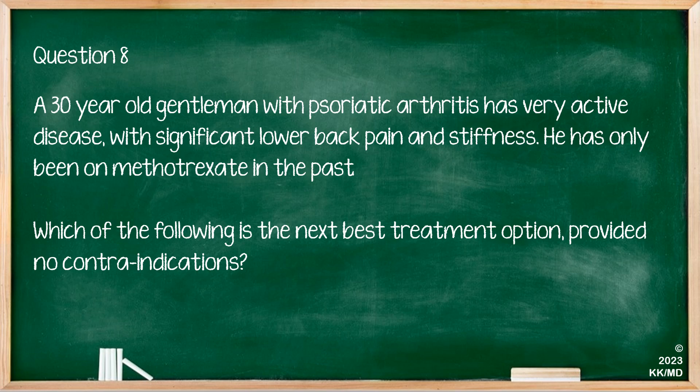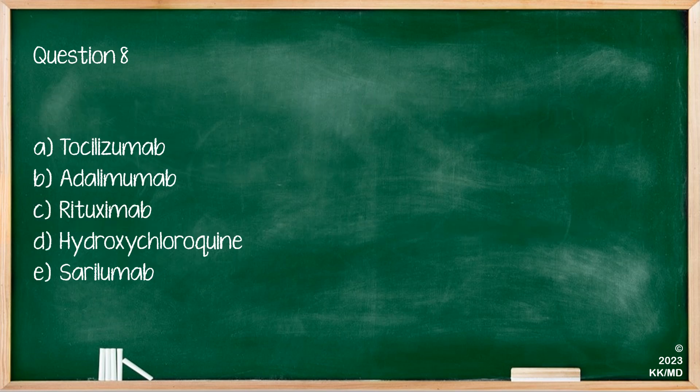Finally, a 30-year-old gentleman with psoriatic arthritis has very active disease with significant lower back pain and stiffness. He has only been on methotrexate in the past. Which of the following is the next best treatment option, provided there are no contraindications? The options are tocilizumab, adalimumab, rituximab, hydroxychloroquine, or cerulumab. The only drug listed here that is licensed for psoriatic arthritis is adalimumab, which is a TNF-alpha inhibitor. None of the others are used for the treatment of psoriatic arthritis.